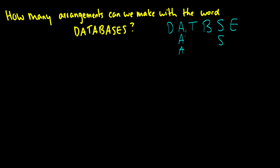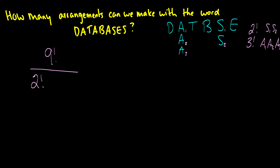Let's label them: A1, A2, A3, S1, S2. There are 2 factorial ways to arrange S1 and S2, and 3 factorial ways to arrange A1, A2, A3. Total letters: 1, 2, 3, 4, 5, 6, 7, 8, 9 — there are 9 letters total. So we have 9 factorial over 2 factorial times 3 factorial. This is the general formula: if you have k identical items, you divide by that factorial.